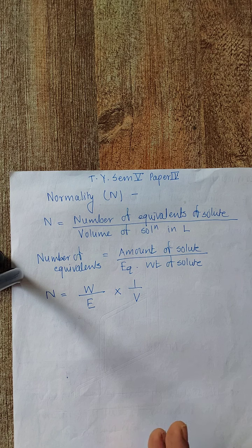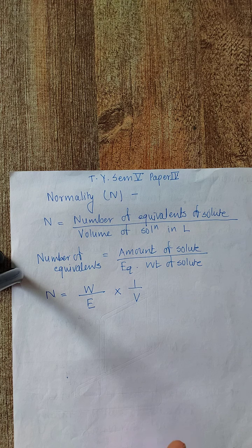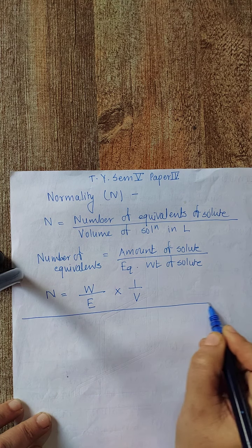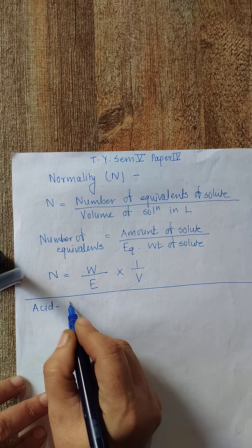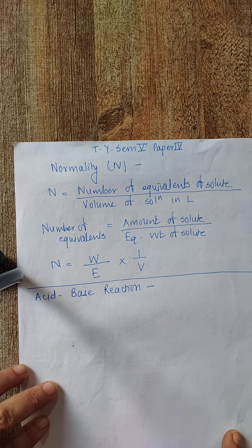These reacting units will vary or change according to the type of reaction involved. So if you want to determine the equivalent weight of any species, it will depend on the type of reaction involved. Mainly the types of reactions are: neutralization reaction (acid-base reaction), precipitation reaction (formation of sparingly soluble salt), complexation reaction (formation of complex), and redox reaction (involving oxidation and reduction).